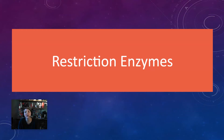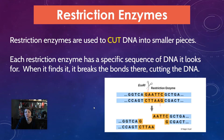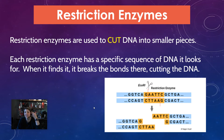Hi guys, this is Mrs. Ulmer and today we're going to cover restriction enzymes and genetic engineering. Restriction enzymes are used throughout biotechnology and all they do is cut DNA into smaller pieces. There are lots of different restriction enzymes and they all have a specific sequence of DNA that they look for, and when they find that specific sequence they break the bonds, cutting the DNA.